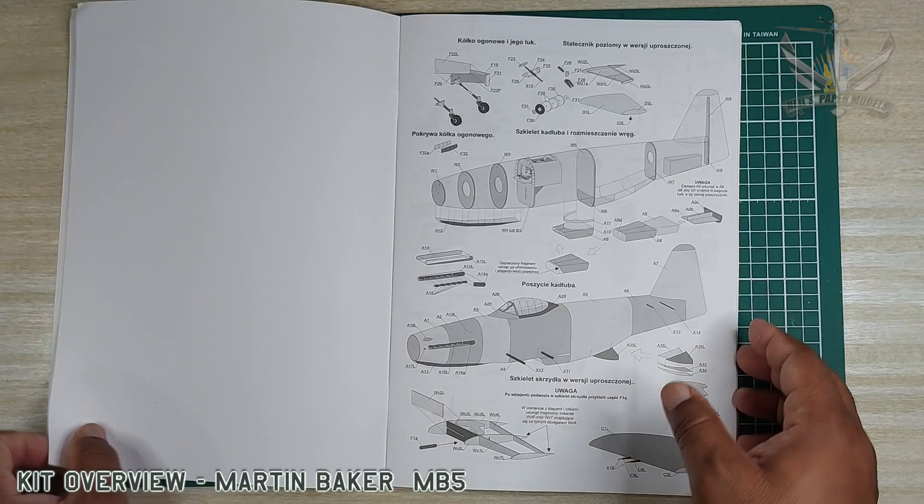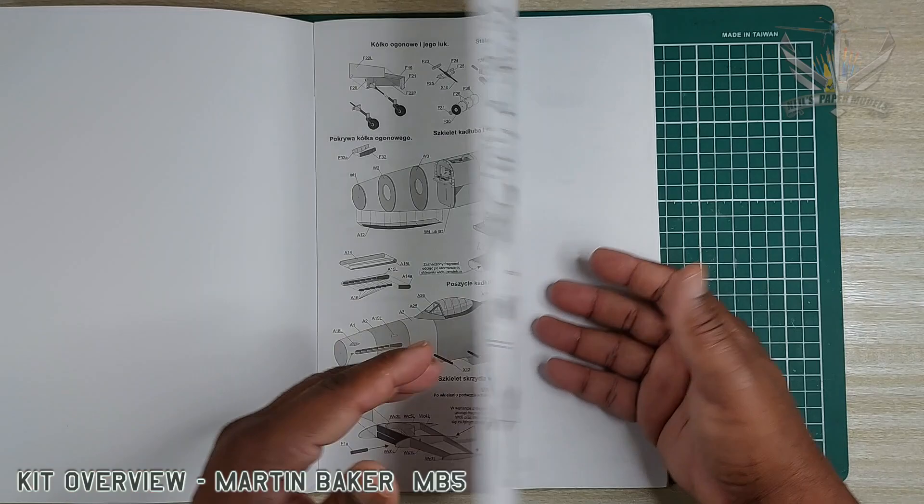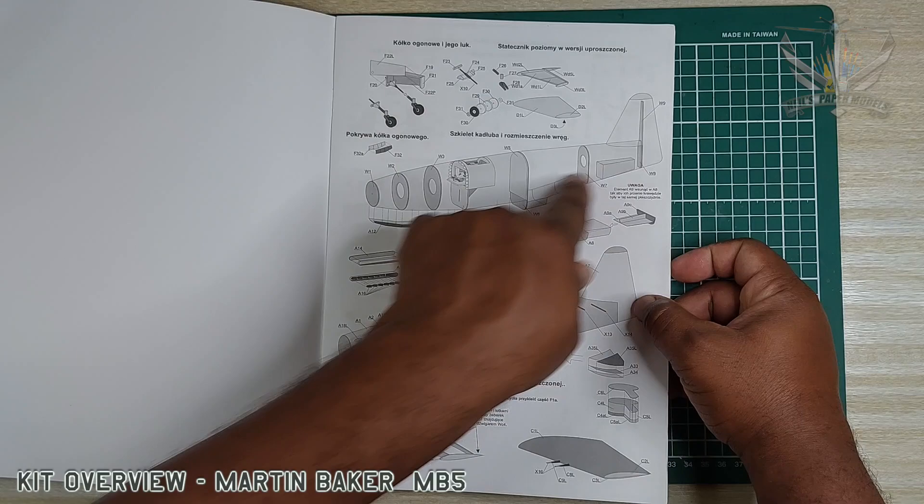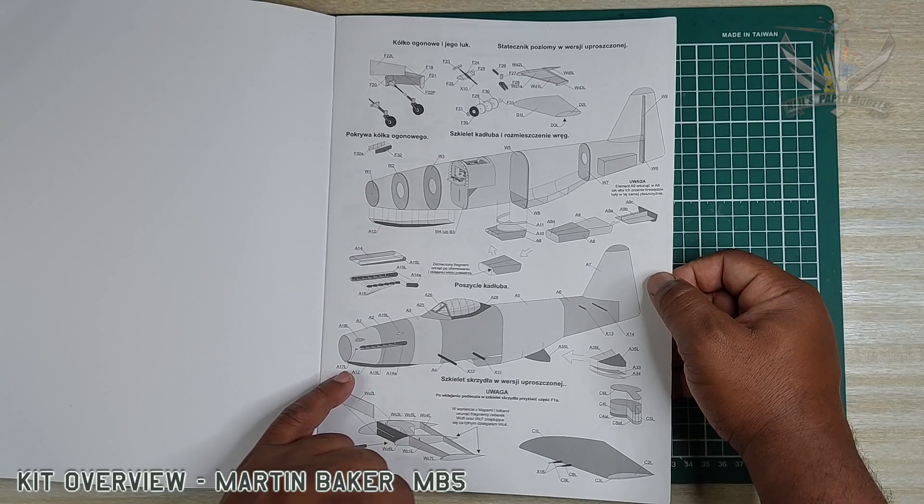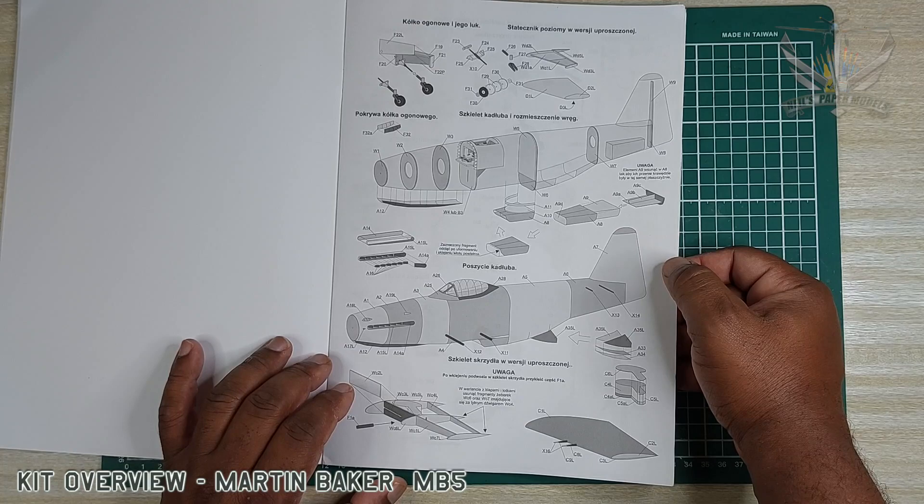And of course the instruction thin sheet, like a bond sheet, 70-80 gram. And as you can see, tail wheel, fuselage, how the fuselage setup is in detail. Really looking nice and spiffy.